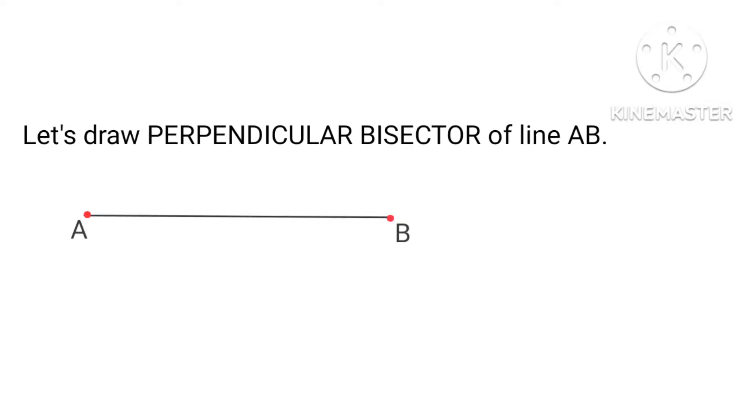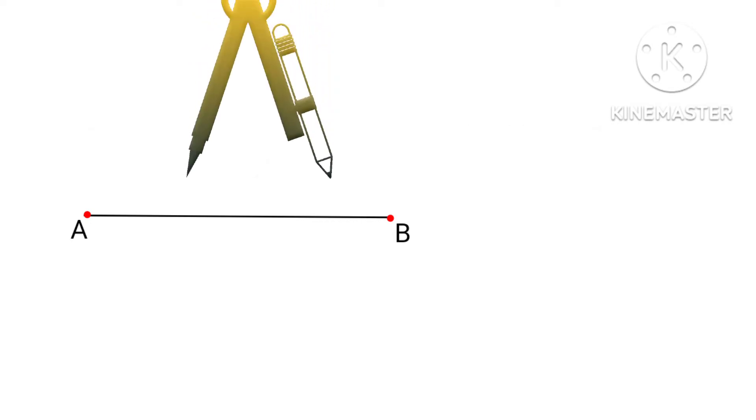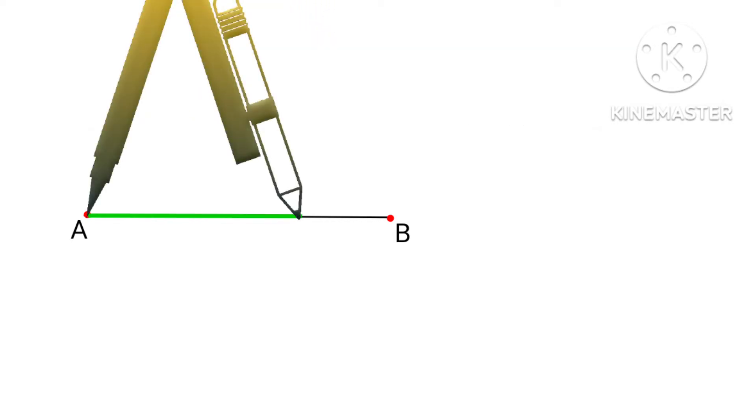Let's draw perpendicular bisector to this line AB. For that, take a compass and take a compass length more than half of this line AB.